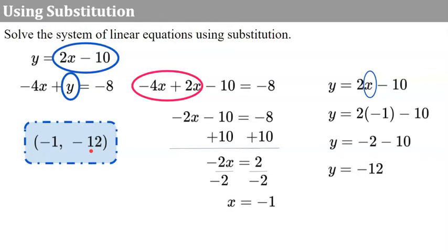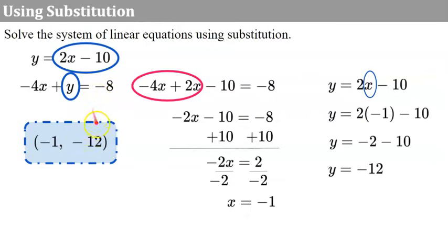Our final step is to check. We go back to both of these original equations. y needs to equal negative 12 when I replace x with negative 1: 2 times negative 1 is negative 2, negative 2 subtract 10 is negative 12. Let's check the second equation: negative 4 times negative 1 is positive 4, positive 4 plus negative 12 is negative 8. It checks. So our solution is the ordered pair negative 1, negative 12. Be sure you have parentheses and your x and y values are in the correct location separated by a comma.